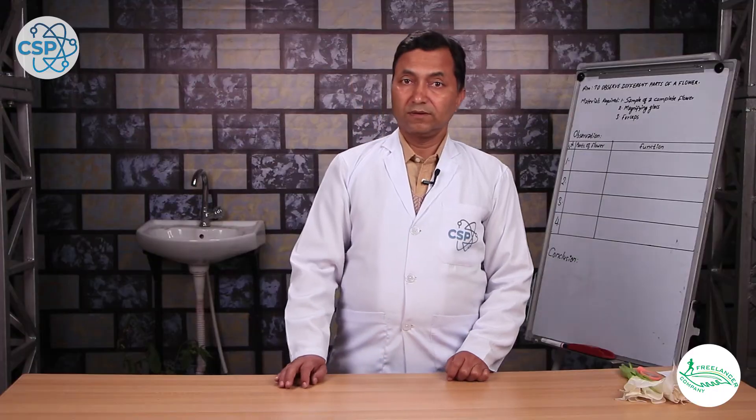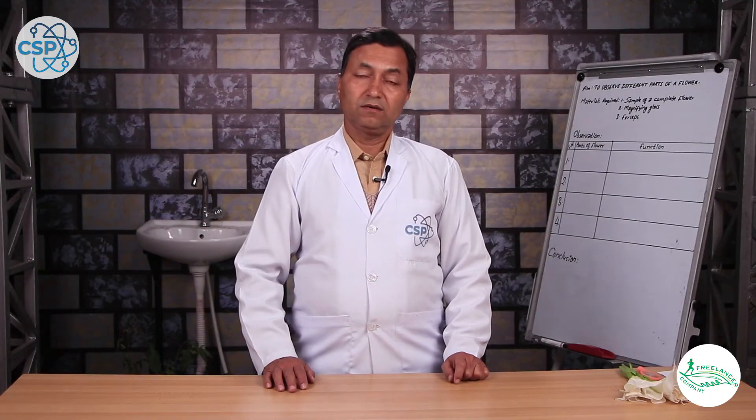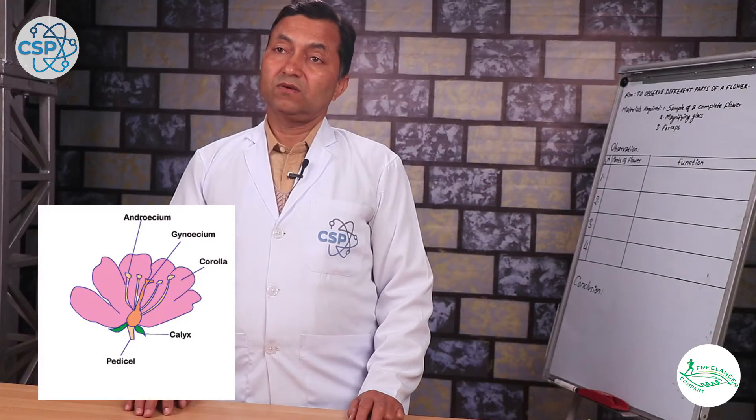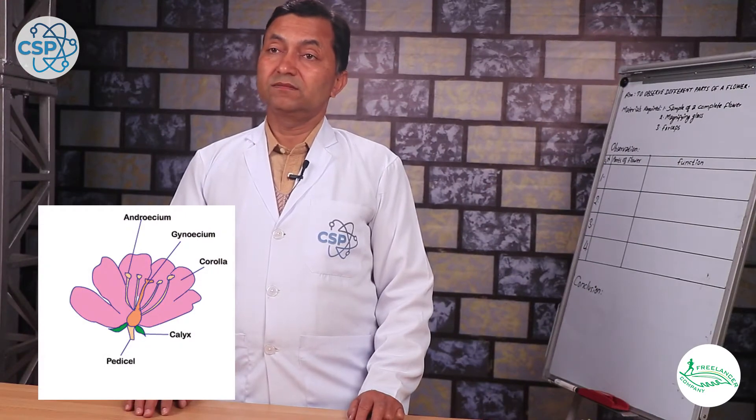Now I am going to start the practical on the complete and the incomplete flower. A flower has 4 basic parts: Calyx, Corolla, Androecium, and Gynoecium.